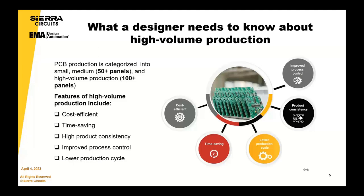High product consistency is another benefit — the larger the volume, the more process control we can put in place, and the more we can learn from production to increase efficiency and overall effectiveness of that process. And ultimately, a lower production cycle.